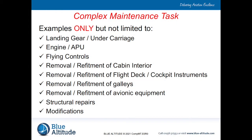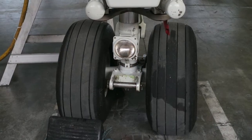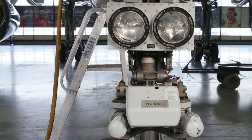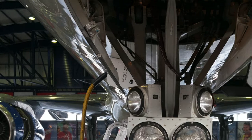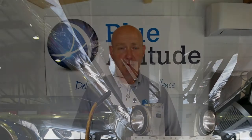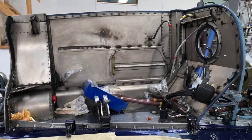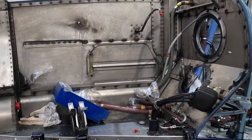So what other examples can we think about that would involve a complex maintenance task? Well, firstly, think about the main components — that could involve the removal or installation of a landing gear or undercarriage, depending on what aircraft type you're working on. I've already mentioned the engine, but also including the APU — the auxiliary power unit.